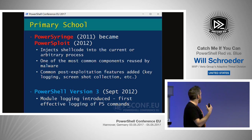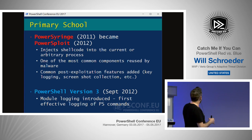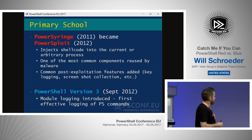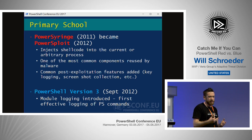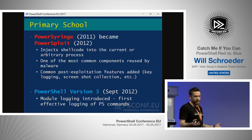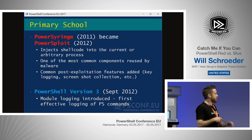PowerShell version 3 came out in September 2012. We really saw here that the team started paying attention to the security angle, particularly with module logging that was introduced. We didn't actually encounter a huge amount of version 3 from the offensive side because we didn't see that much Windows 8.1 — a lot of clients tend to skip it. Most people, sadly, are still using Windows 7, but we keep trying to push people towards Windows 10.